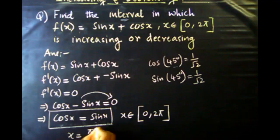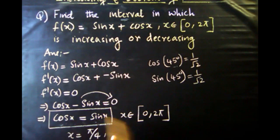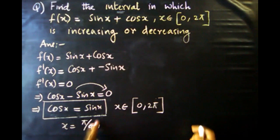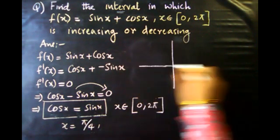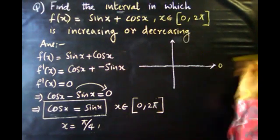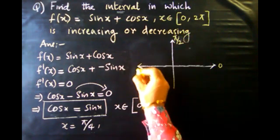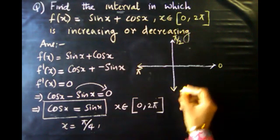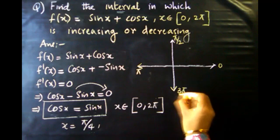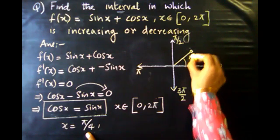So x equals pi by 4. Now pi by 4 is in the first quadrant. On the unit circle: 0 degrees, 90 degrees (pi by 2), 180 degrees (pi), 270 degrees (3 pi by 2). Pi by 4 lies in the first quadrant.